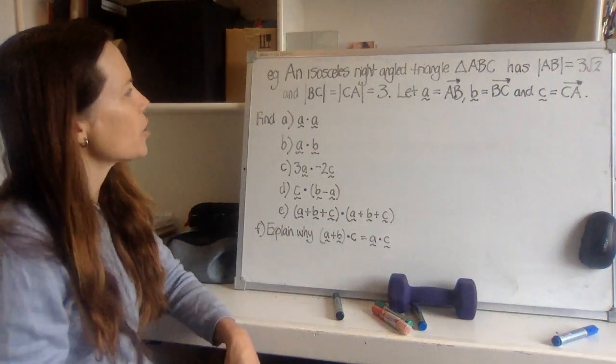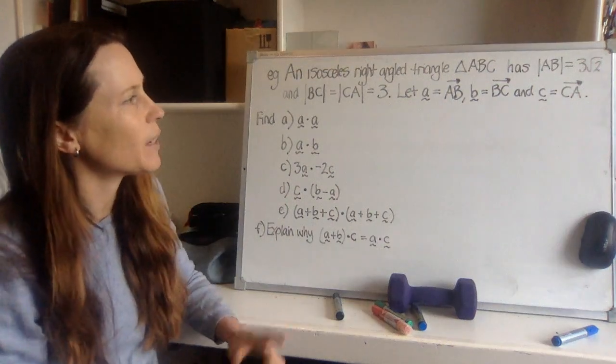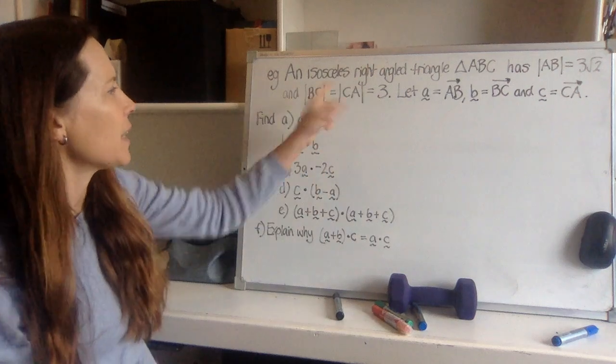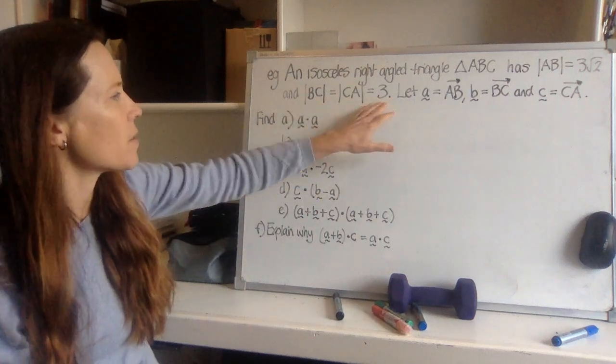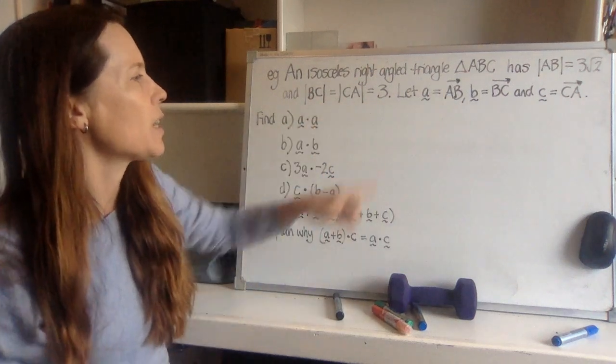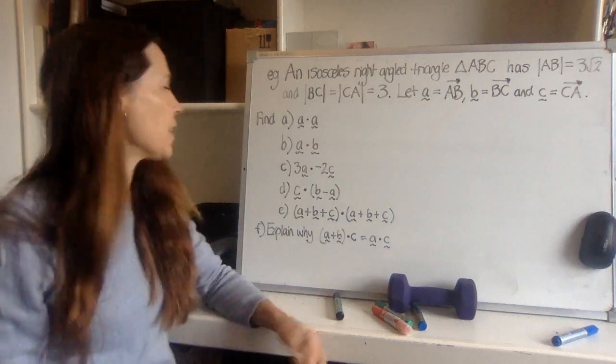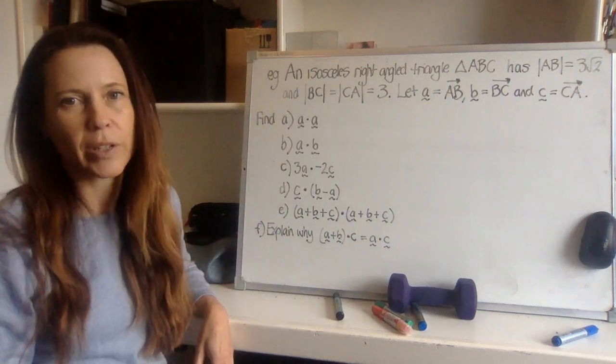Now for an example, an isosceles right-angled triangle ABC has various lengths as listed. So these are the sides that are the same, the other side is different, and we've got some vectors to find there. And we need to find a bunch of dot products.